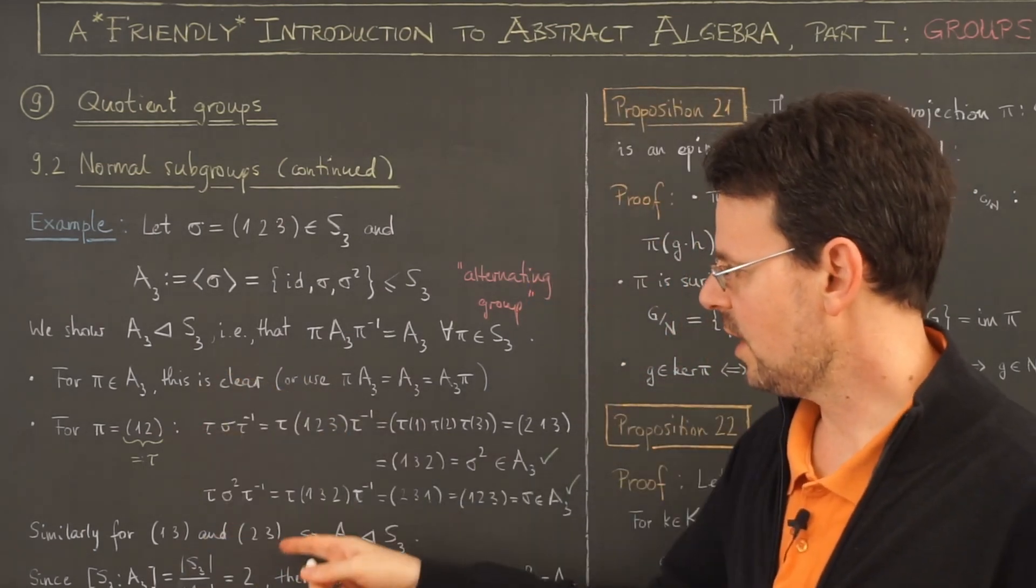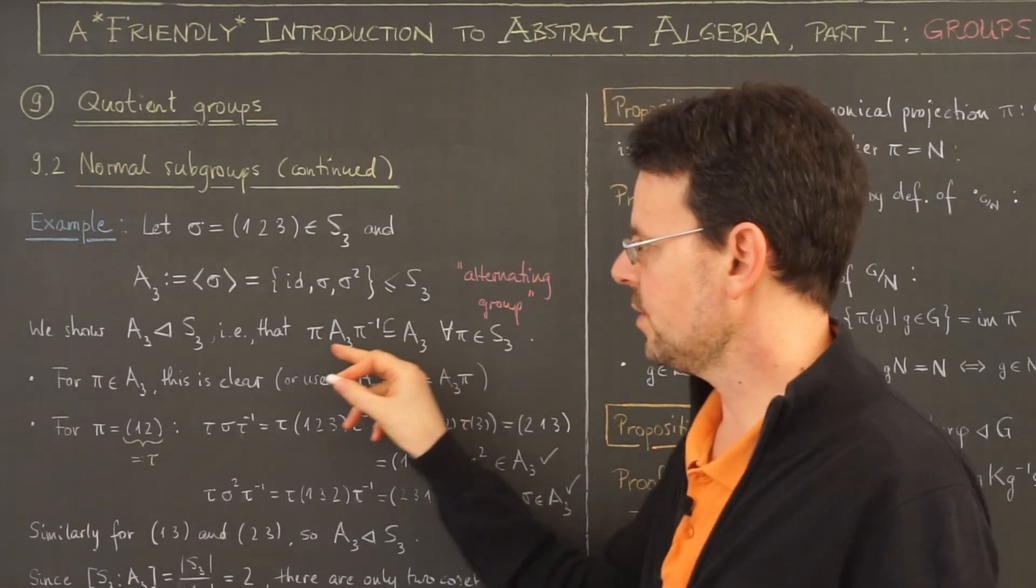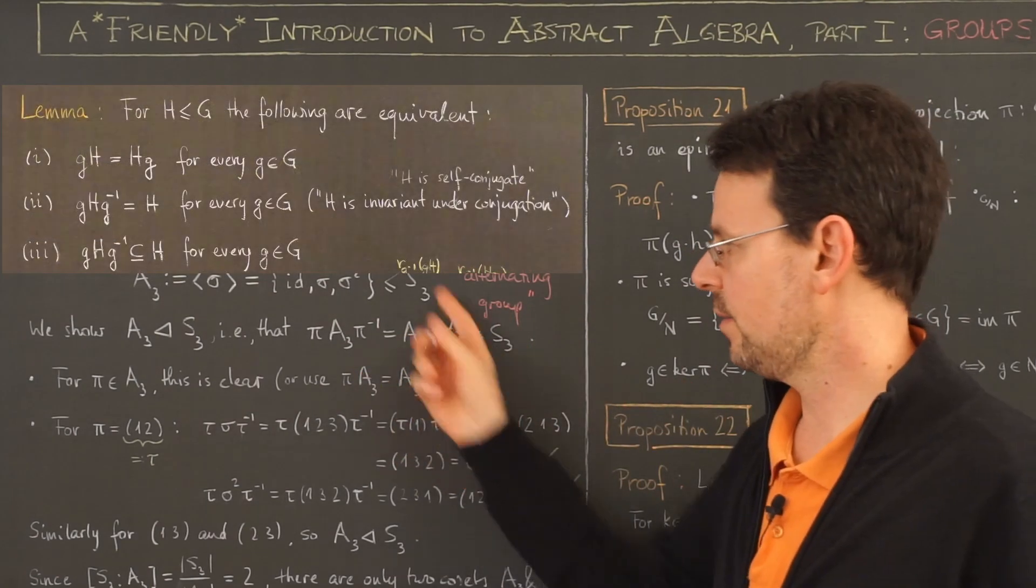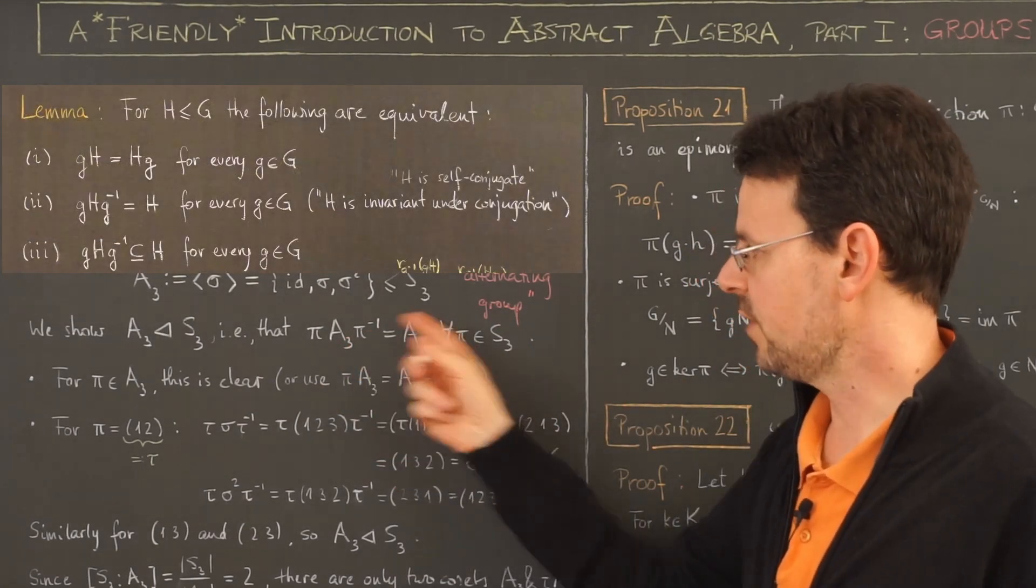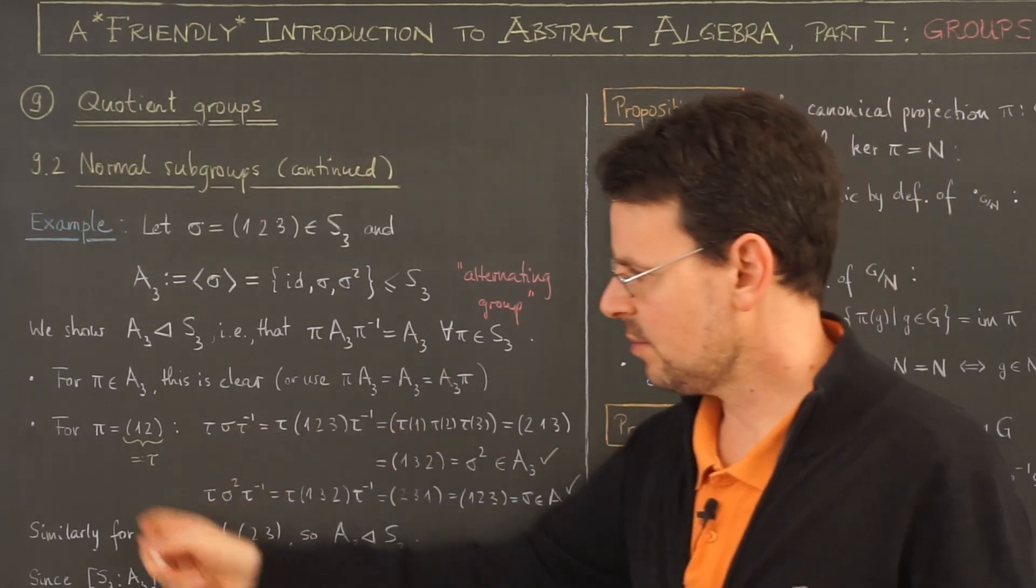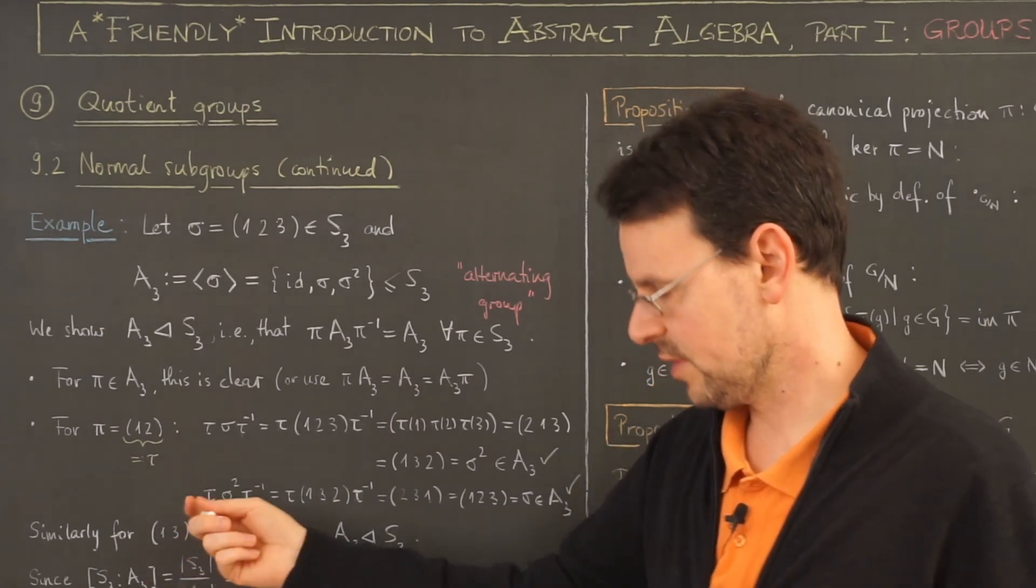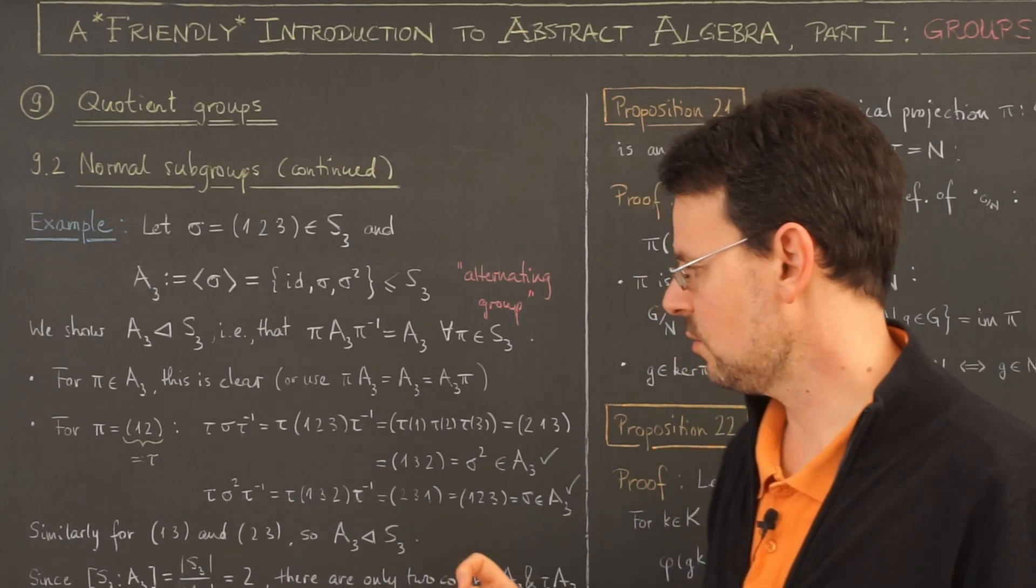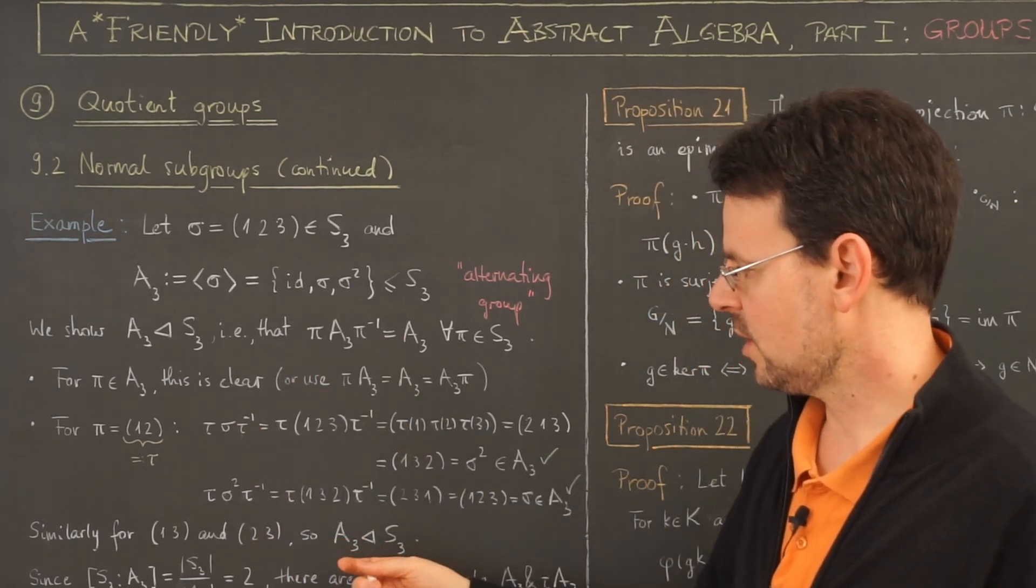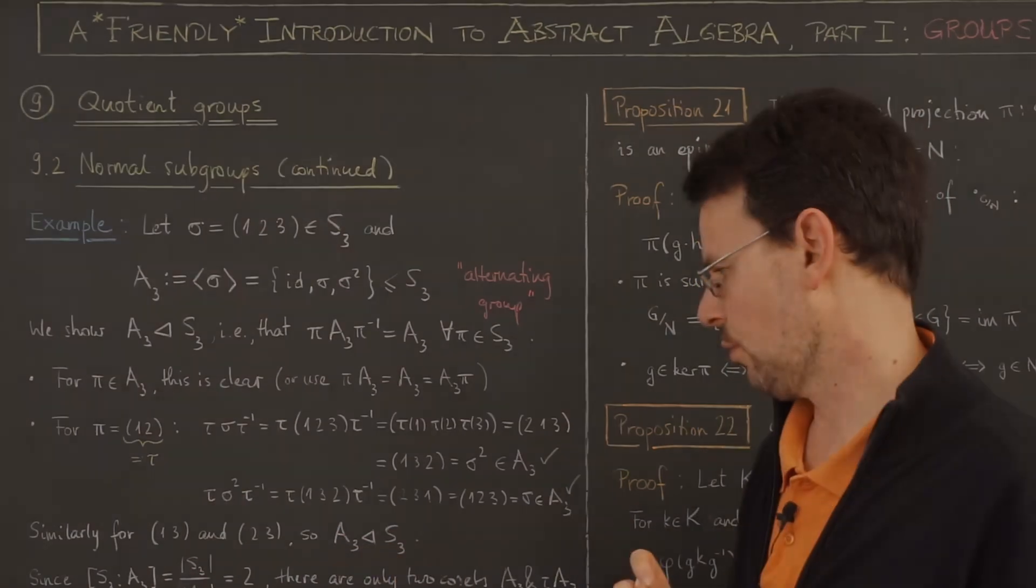This again proves that this here holds for this pi, and again by our lemma this is enough to prove that I have equality here. And the same can be done of course for the other transpositions (1,3) and (2,3). So by elementary calculation I see that A3 is indeed a normal subgroup of S3.